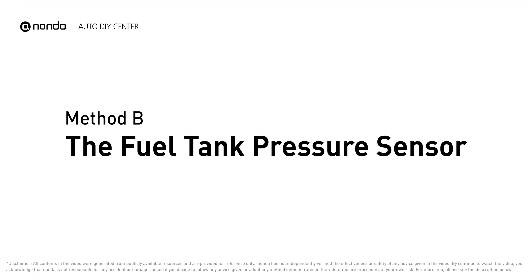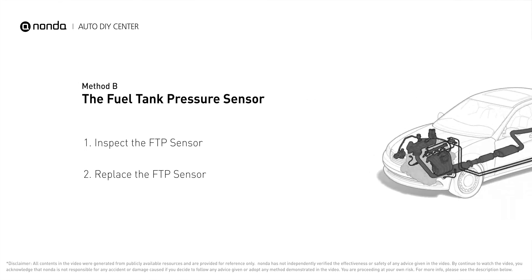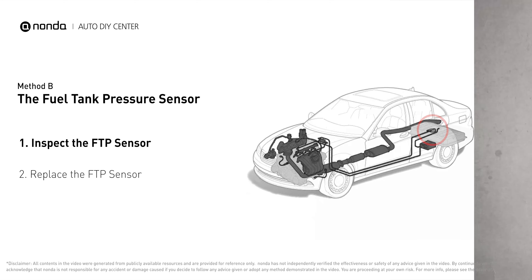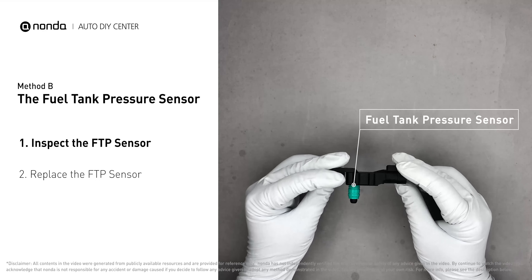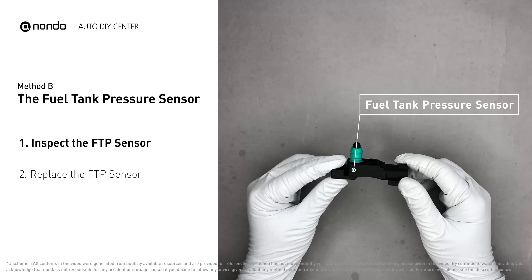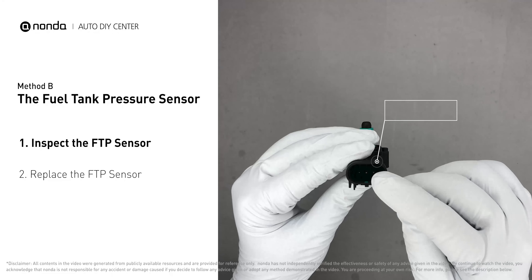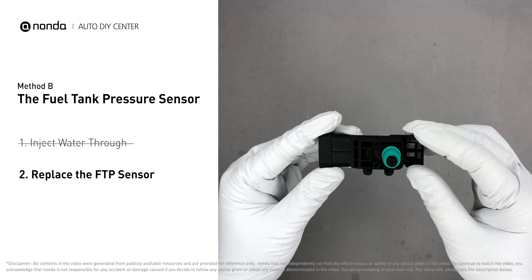Method B: the fuel tank pressure sensor. The fuel tank pressure sensor is part of the fuel pump assembly and is usually mounted on top of the tank. Carefully remove the fuel tank pressure sensor from the fuel tank. Check the seal and the electrical connection for any damages. If damages are found, replace the fuel tank pressure sensor.